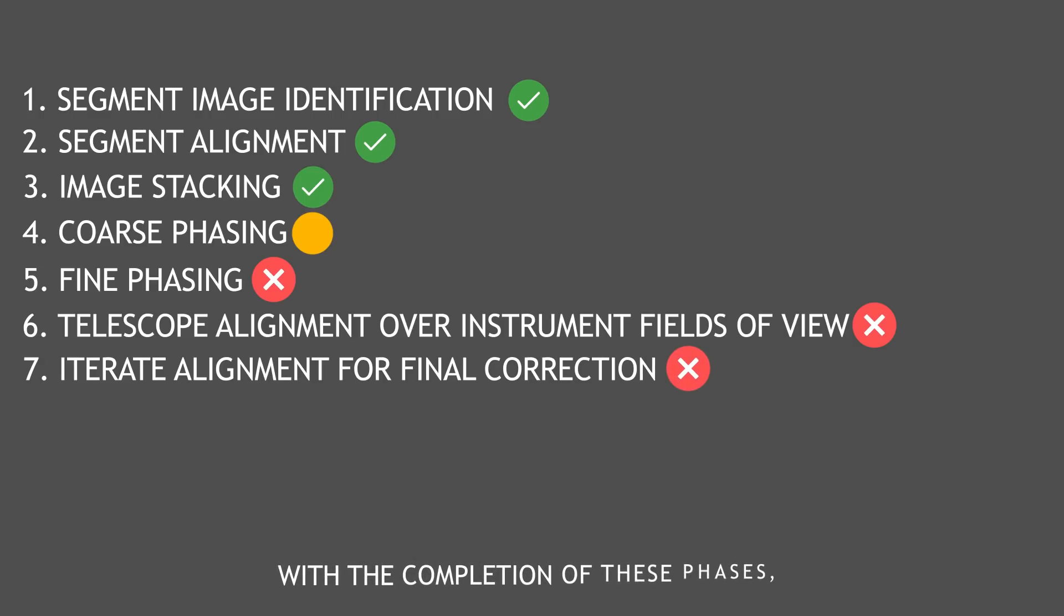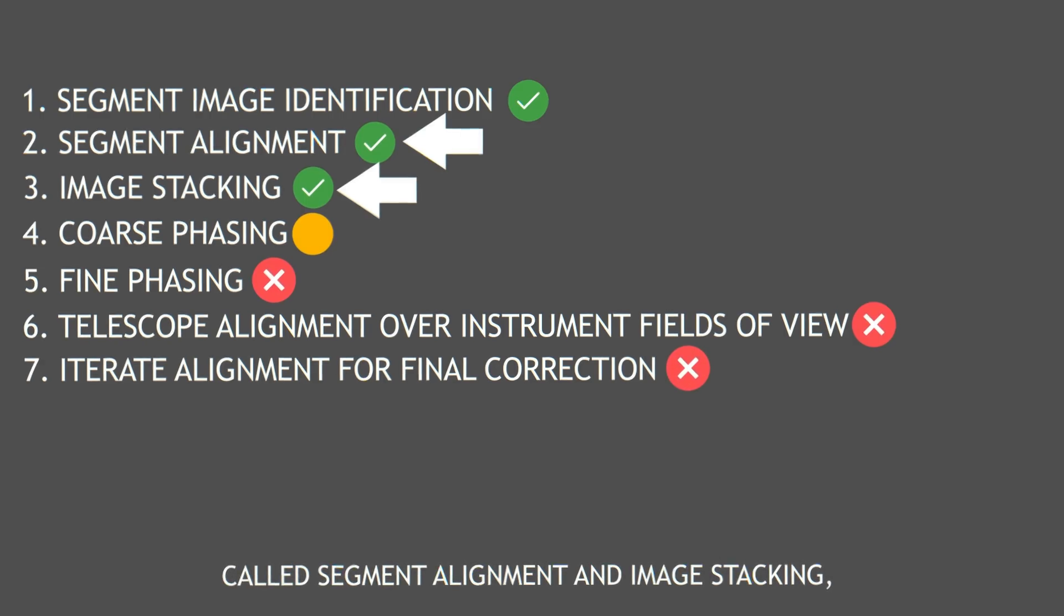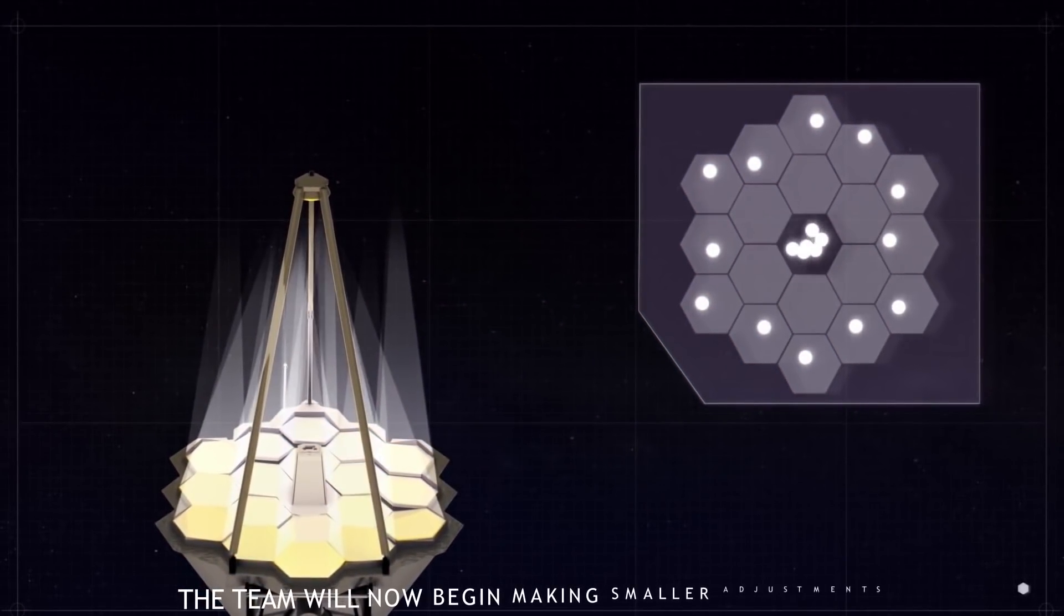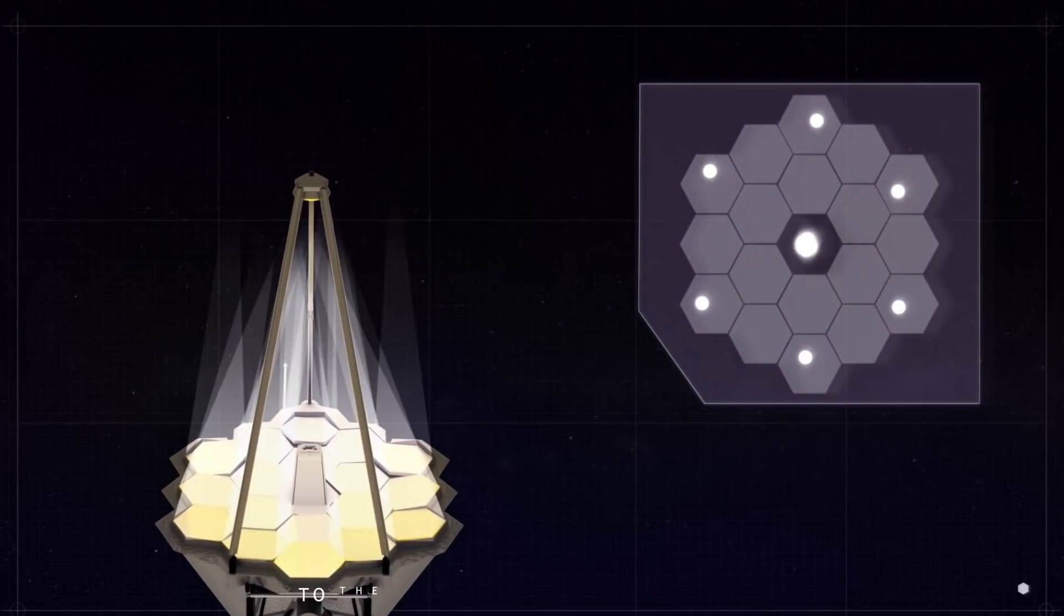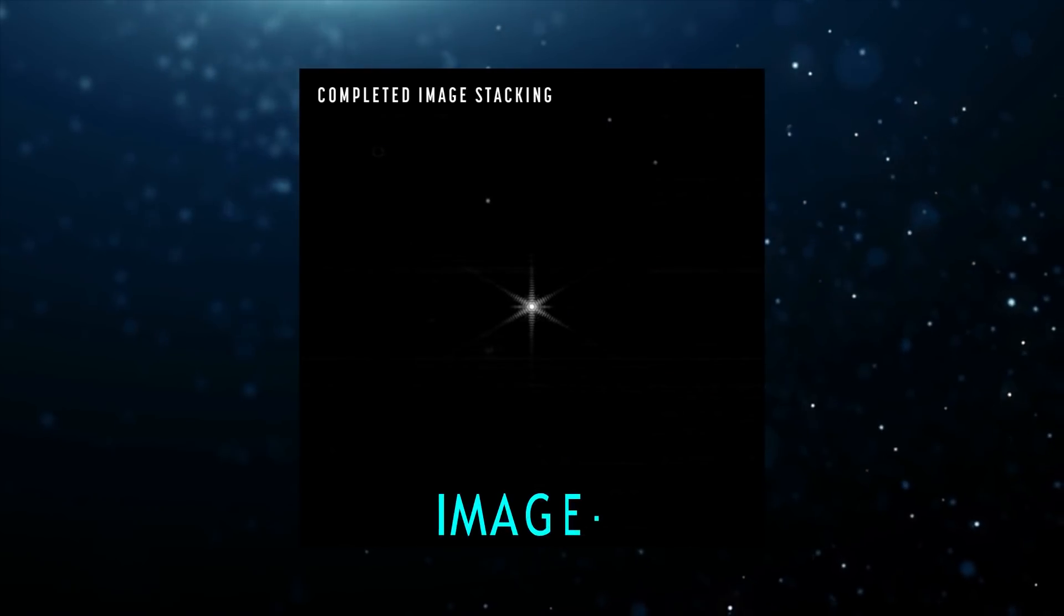With the completion of these phases, called segment alignment and image stacking, the team will now begin making smaller adjustments to the positions of Webb's mirrors.